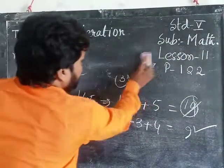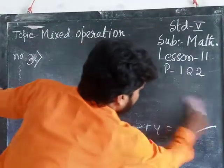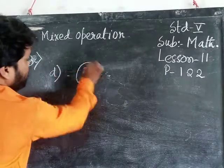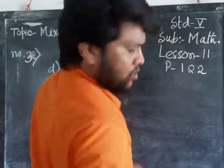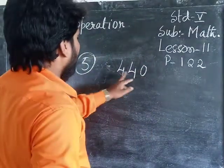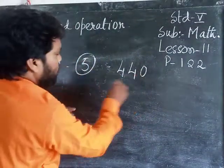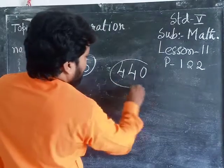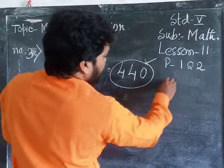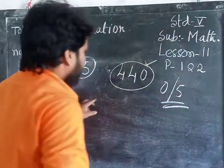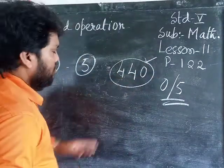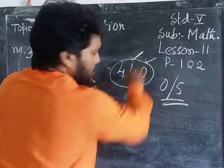Divisibility method of 5. Next, number D. There are so many numbers. Suppose 440. Is 440 divisible by 5? What is the process? If the number, the place of one's digit, 5 or 0, if the number contains 0 or 5 in the one's place, the number will be divisible by 5. So it is divisible by 5.